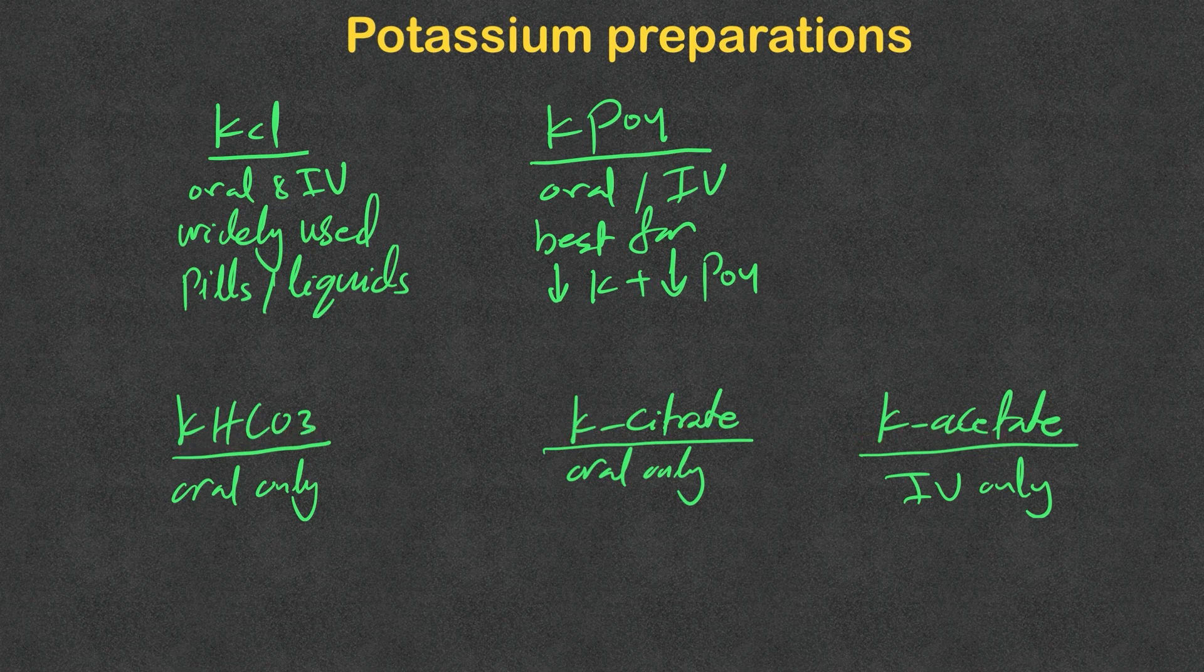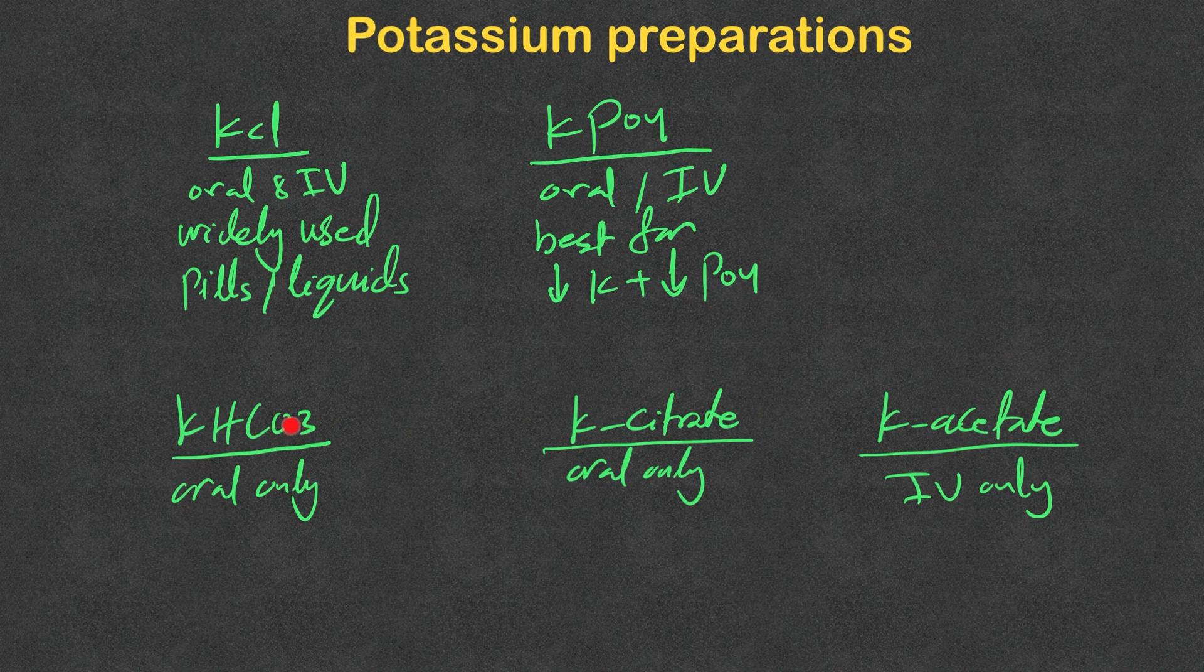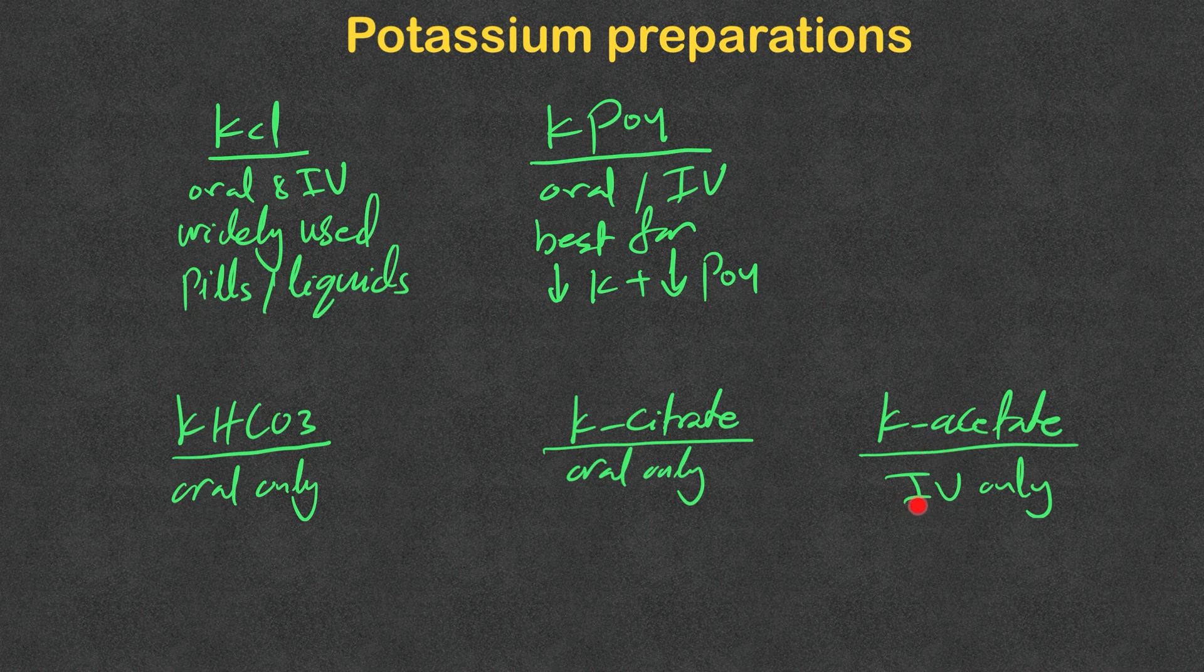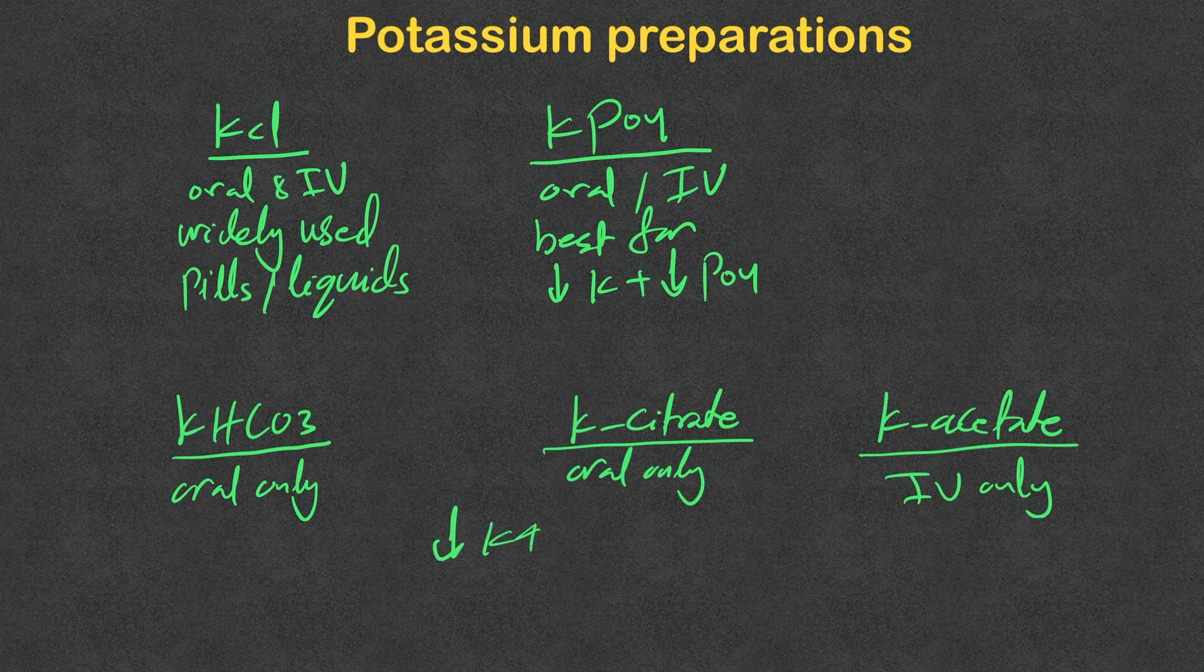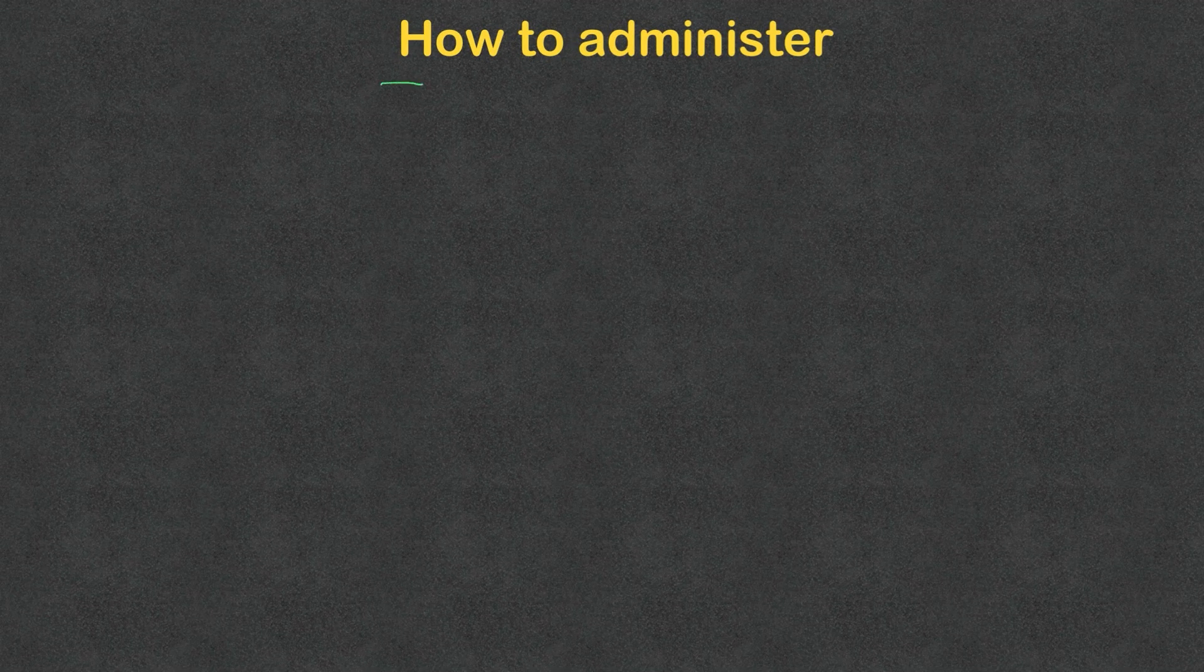Potassium bicarbonate, potassium citrate, and potassium acetate. What connects them? Citrate and acetate are precursors to bicarb. They are metabolized into bicarb when they get into the body by the liver. The citrate and bicarb are available in oral form only, and the acetate in IV form only. As you can guess, they are best to be given if there is hypokalemia associated with bicarb loss, and that means normal anion gap metabolic acidosis.